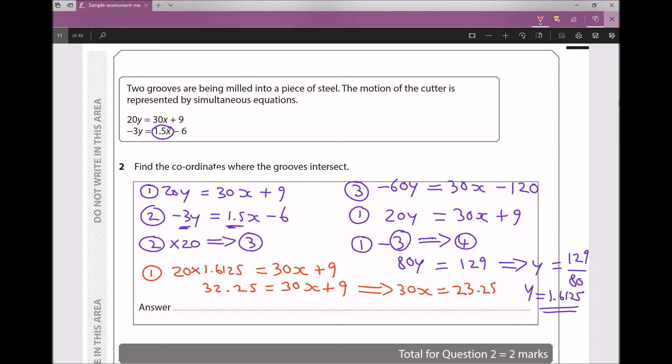And finally, I need to divide each side of that by 30 to get x on its own. So we get x = 23.25 over 30, which is 0.775.